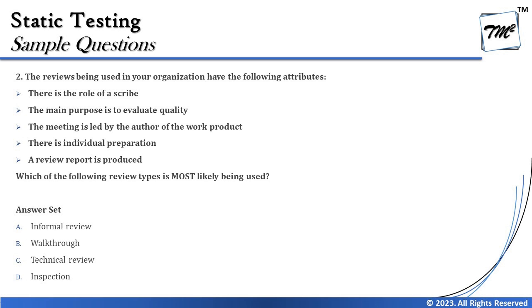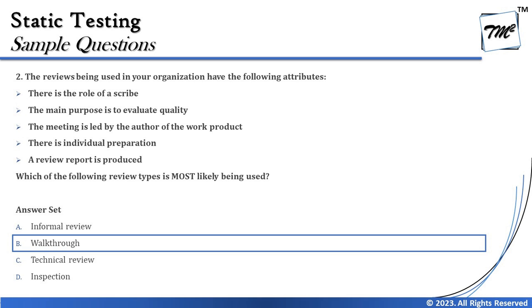Which review type is most likely being used? The answer is B - Walkthrough. Walkthrough is unique in that the meeting is led by the author, which doesn't happen in any other type of review.